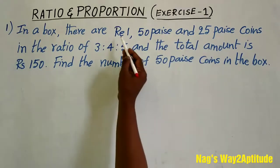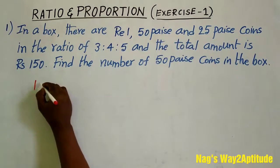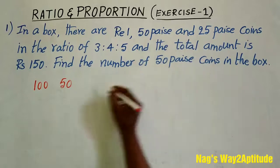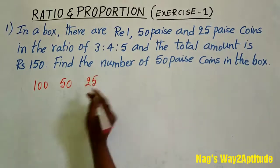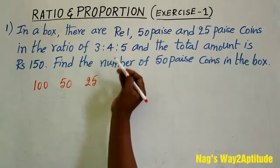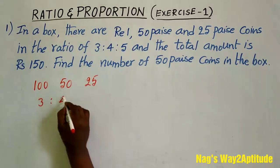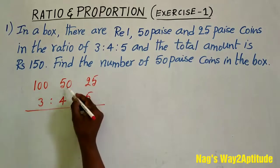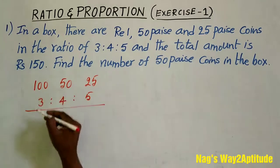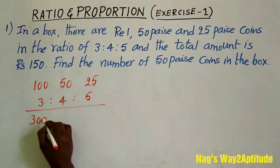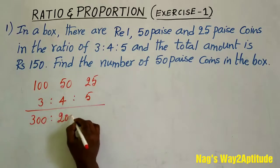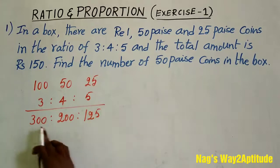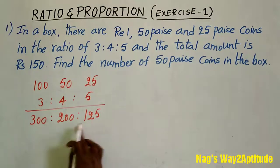So you write the given data: 1 rupee is nothing but 100 paisa, 50 paisa, and 25 paisa. These denominations are in the ratio of 3 is to 4 is to 5. Now you multiply these two terms, these two terms and these two terms: 100 into 3 is 300, 50 into 4 is 200, and 25 into 5 is 125. In 300, 200 and 125, we can cancel 25.